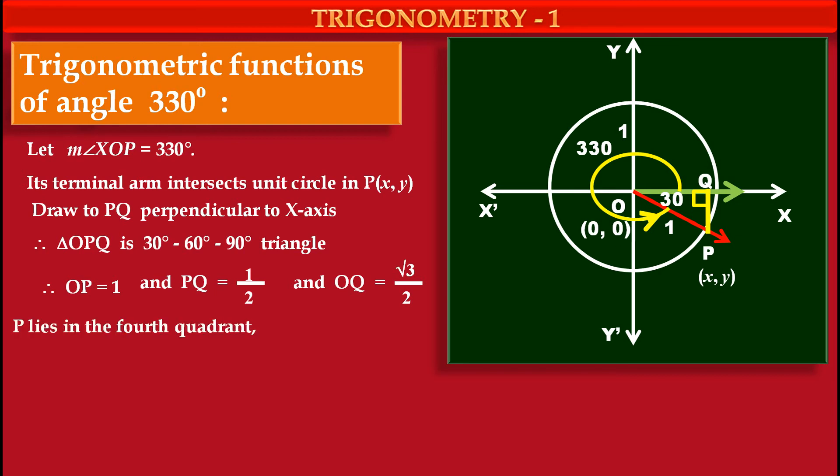Now because of this angle 330 degrees, P lies in the fourth quadrant, and that's why x coordinate of P is positive but y coordinate of P is negative.